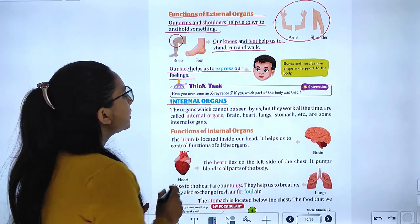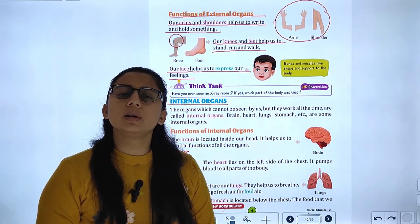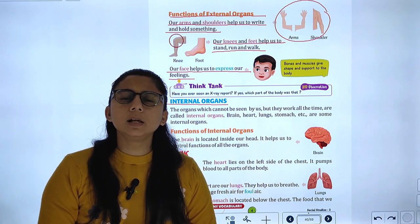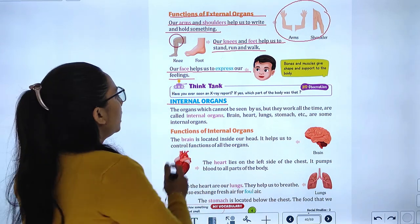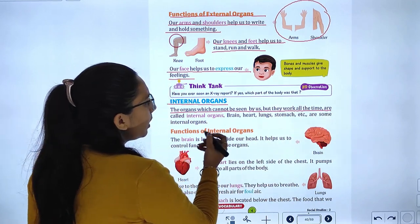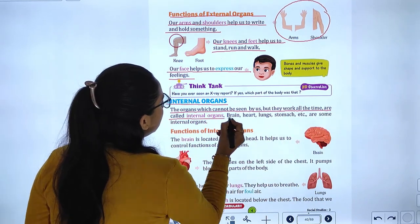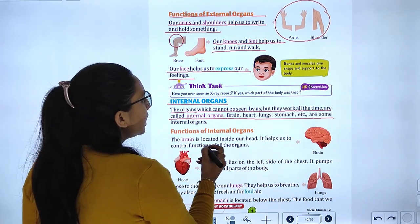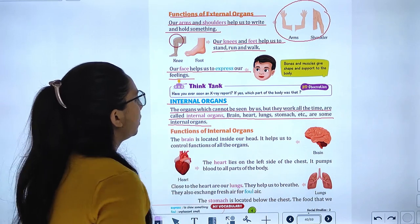Our next topic is internal organs. The organs which cannot be seen by us but work all the time are called internal organs. Brain, heart, lungs, and stomach are some internal organs.